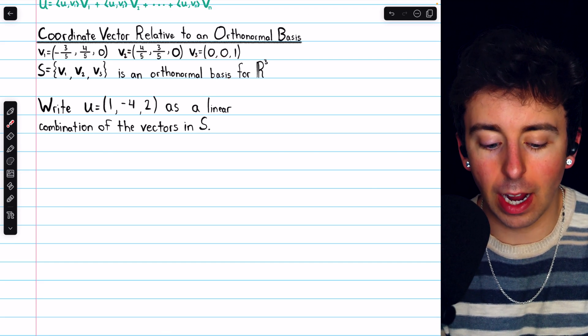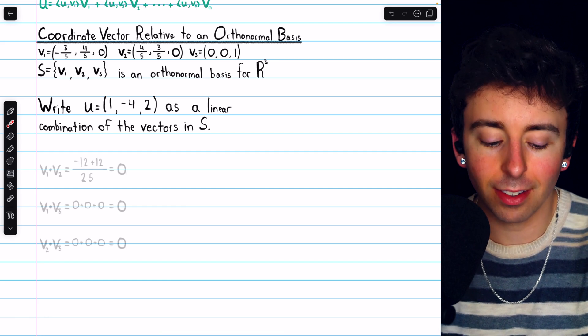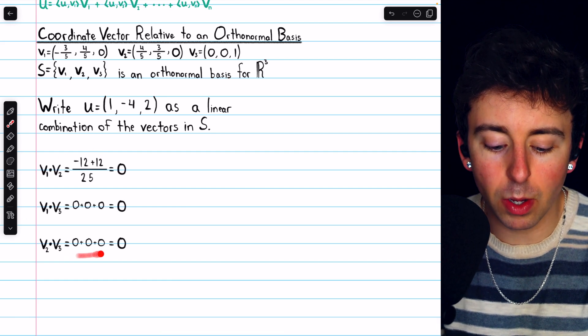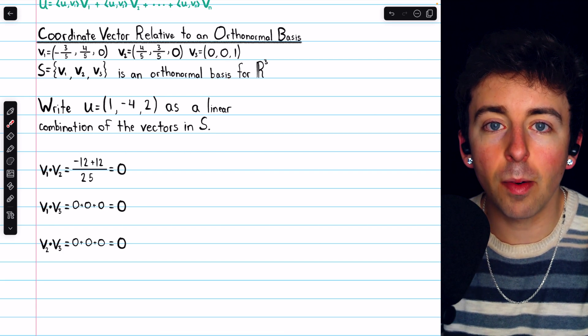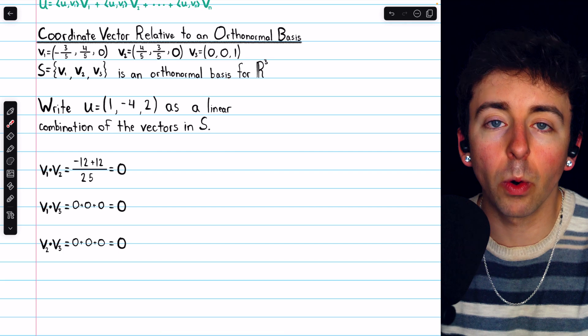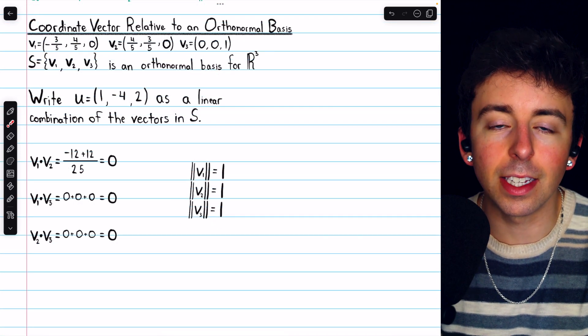You may want to quickly verify that these vectors do indeed form an orthonormal basis. To do that, we may begin by computing dot products. Indeed, each distinct pair of vectors from the basis has a dot product of zero, and so they are orthogonal. Then, we may verify that they are unit vectors. Indeed, they are.